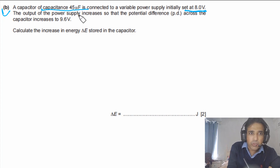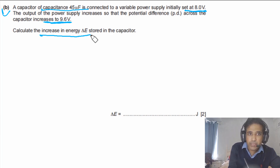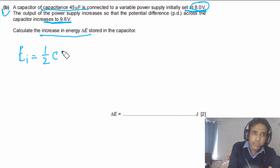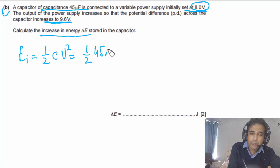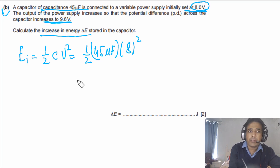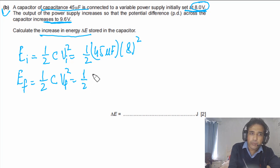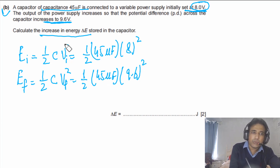The initial energy stored is E_initial = ½CV², with C = 45 microfarads and V = 8 V. The final energy is E_final = ½CV², with V = 9.6 V. You can directly compute ΔE = E_final − E_initial = ½C(V_final² − V_initial²) without needing to plug in intermediate values separately.